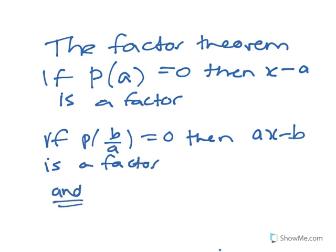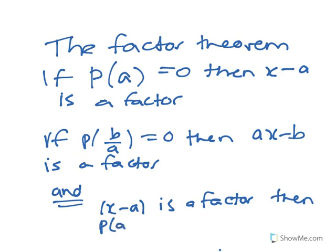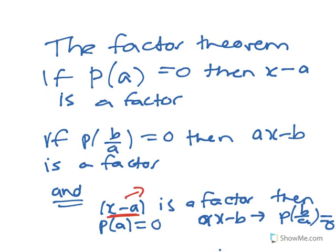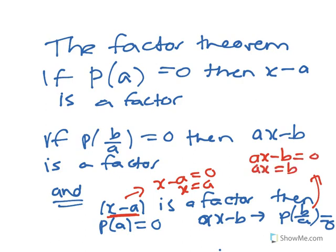And further, if x minus a is a factor, then p(a) equals 0. And the same for ax minus b — then p(b/a) equals 0. It's whatever makes that factor equal 0, so you solve it for 0. So x minus a equals 0 gives x equals a, and ax minus b equals 0 gives ax equals b, so x equals b/a.